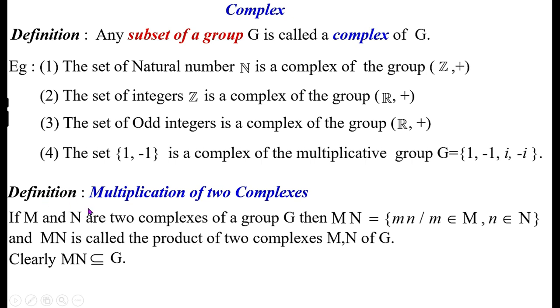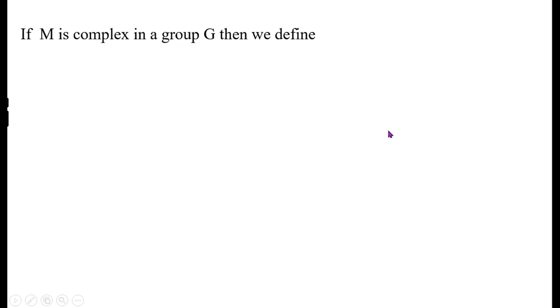Not only are M and N subsets of G, but their product M·N is also a subset of G. That is, the multiplication of two complexes is again a complex.